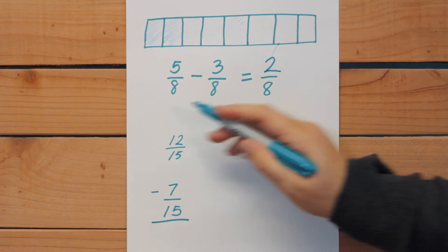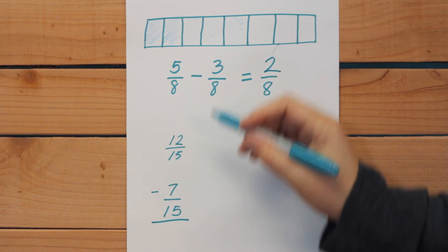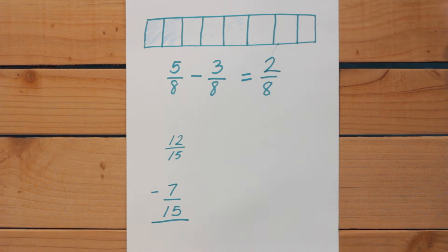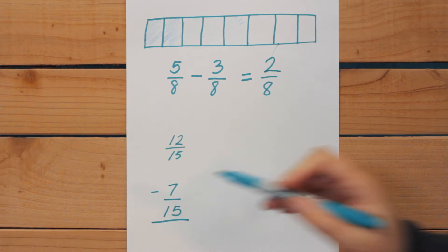5 minus 3 is 2 and the 8 parts stay the same. Now we're going to do a vertical problem: 12/15 minus 7/15.